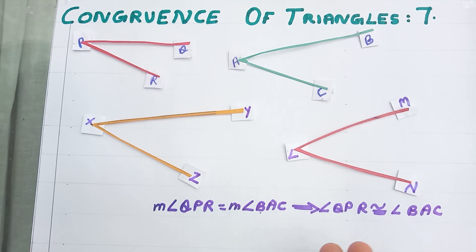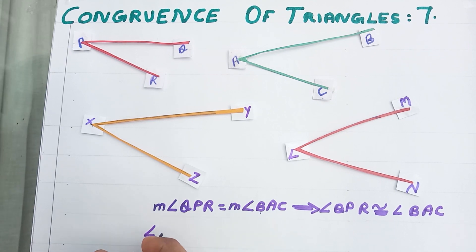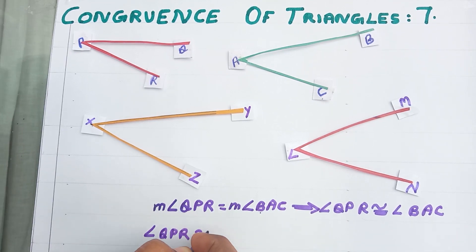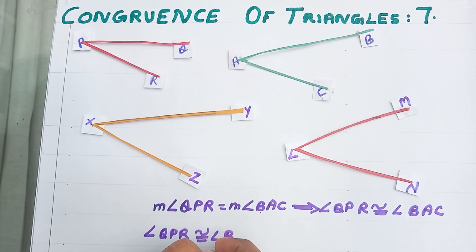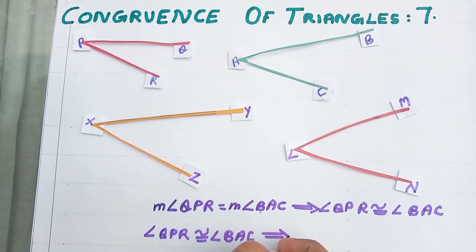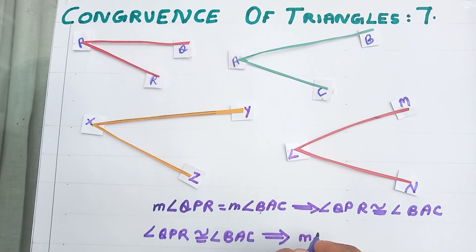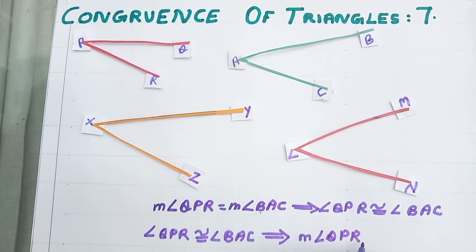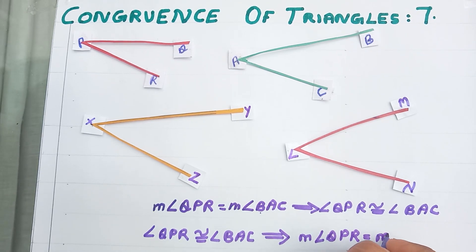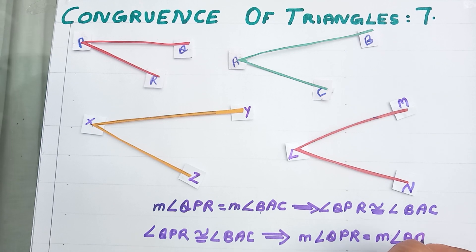In other way we can write down angle QPR is congruent to angle BAC implies measure of angle BAC. Measure of angle QPR is congruent to measure of angle BAC.